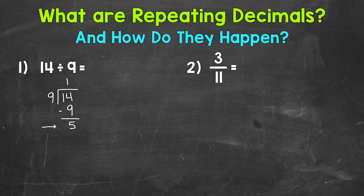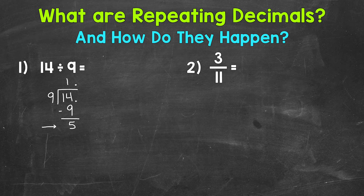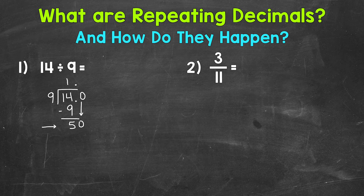Since we want this in decimal form, we need to place our decimal after the whole number — after the 14 — and bring it straight up into our answer. Once we do that, we can extend with placeholder zeros, which do not change the value of the problem; this is still equivalent to 14. Now we can bring that zero down and we have 50 divided by 9. How many whole groups of 9 out of 50? Well, 5. 5 times 9 is 45. Subtract, we get 5.